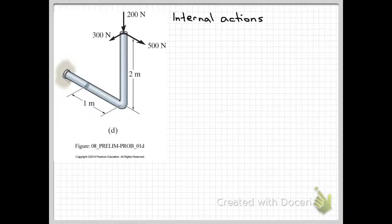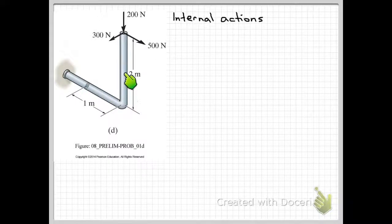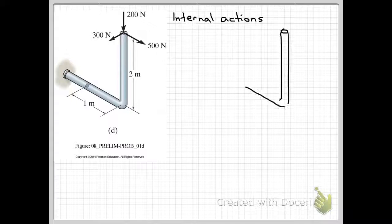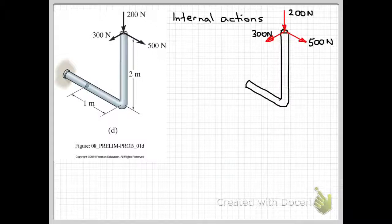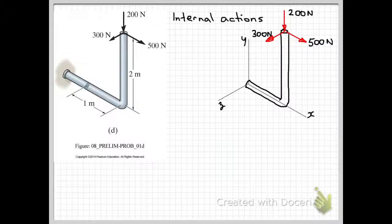The first step in obtaining the internal actions is to take an imaginary cut through the section where we want to know the internal actions. Then we draw one side or the other of that cut. So in this example, I'm just going to draw this side and then put on the external loads that are applied to that side of the component. Next we'll need some axes to refer to.